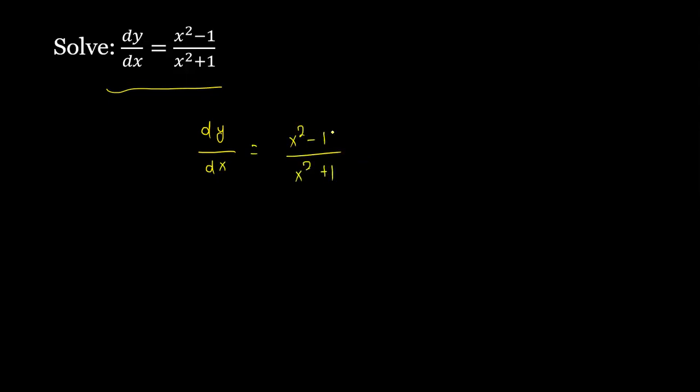First of all, in the numerator we can write this like this: x squared plus 1 minus 2. So this is x squared plus 1 minus 2 divided by x squared plus 1, so dy by dx is equal to 1 minus 2 divided by x squared plus 1.